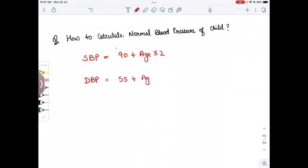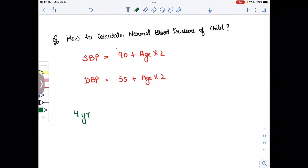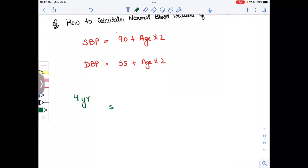So suppose here I am giving you one example. Suppose a boy is 4 years old and we have to calculate his blood pressure. So for his blood pressure, the systolic blood pressure will be 90 plus age is 4 years old into 2, that is 8.